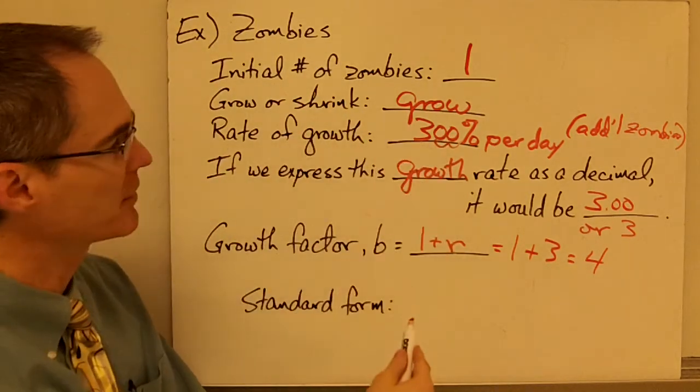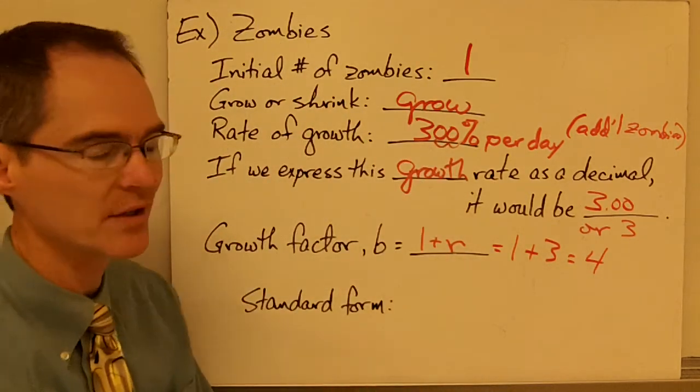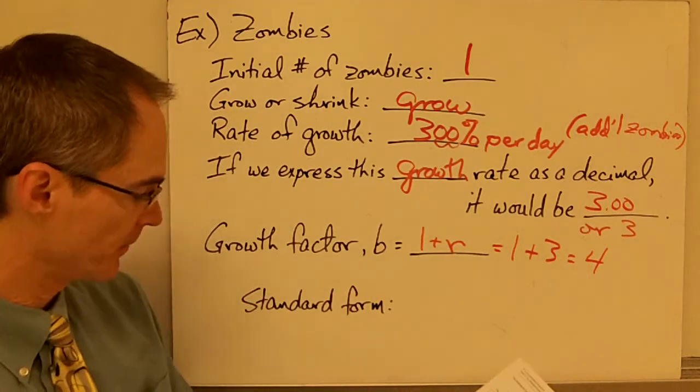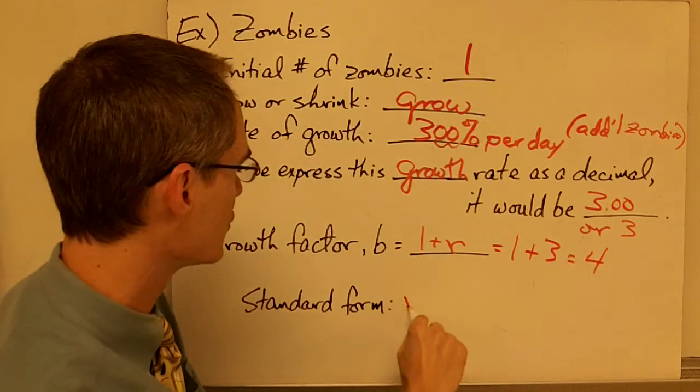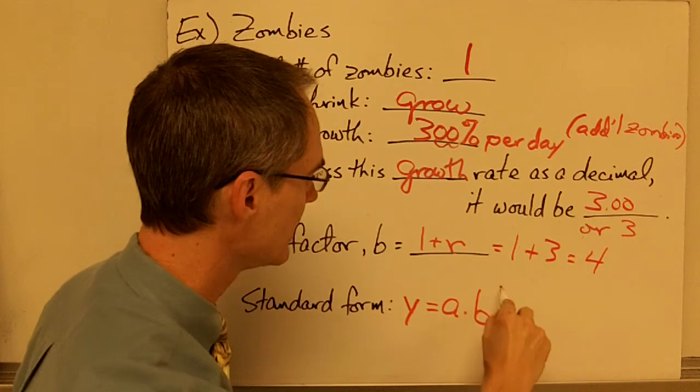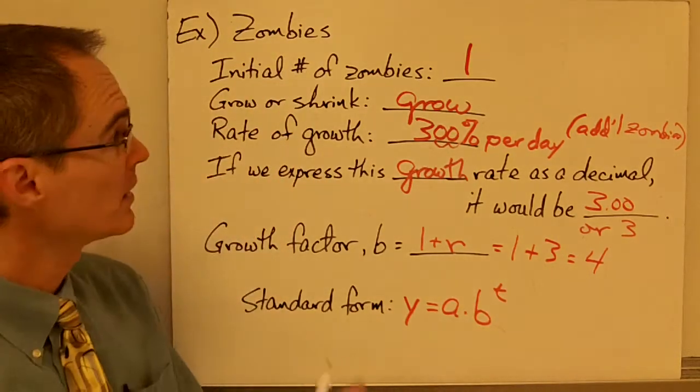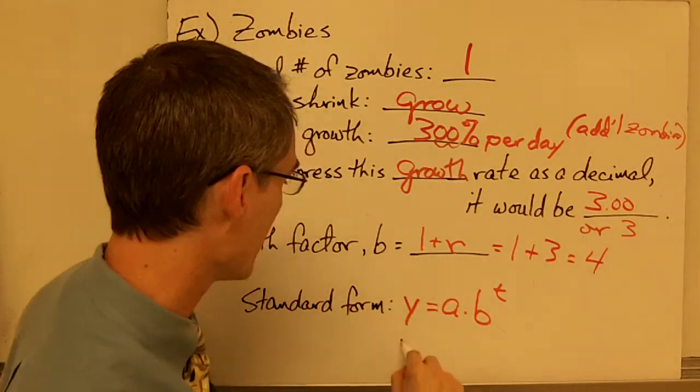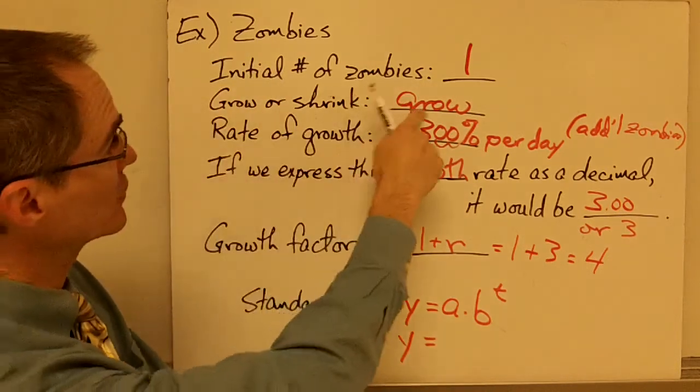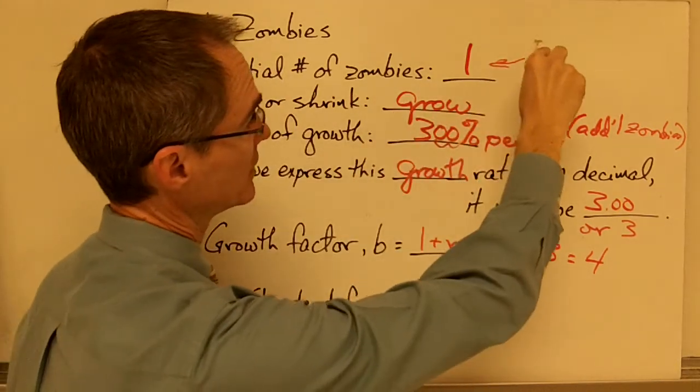Now I have everything I need in order to write the standard form of an exponential function for my zombie situation. So my standard form is Y equals A times B to the power of T. So for this particular situation, I'm going to write Y equals A, my value of A is 1, this is my initial value.